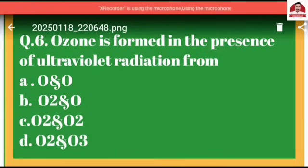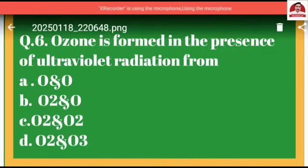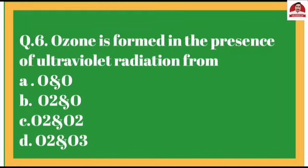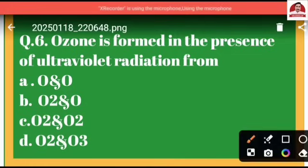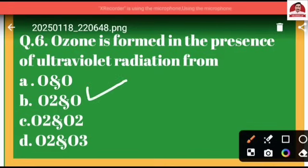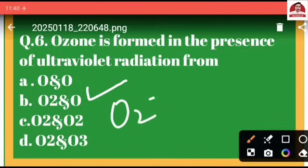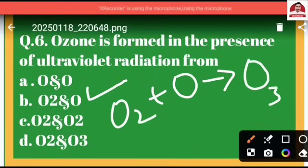Question number six: Ozone is formed in the presence of ultraviolet radiation from — option A: both atomic oxygens combined, option B: molecular oxygen O2 and atomic oxygen combined, option C: two molecules of O2 combined, option D: O2 and O3 combined. The correct answer is option B — O2 and atomic oxygen combine to form the O3 molecule, that is ozone.